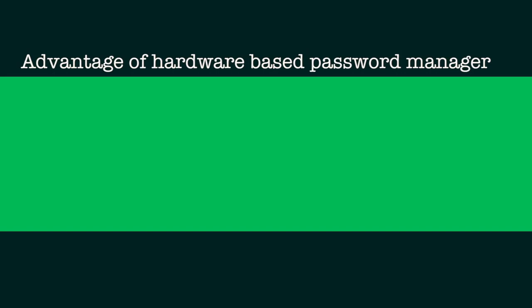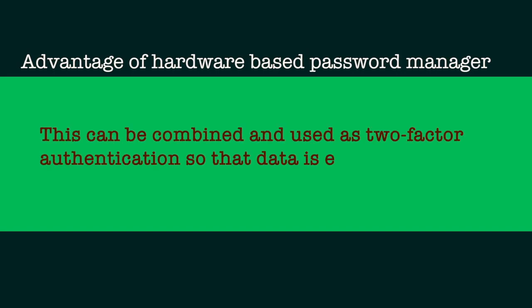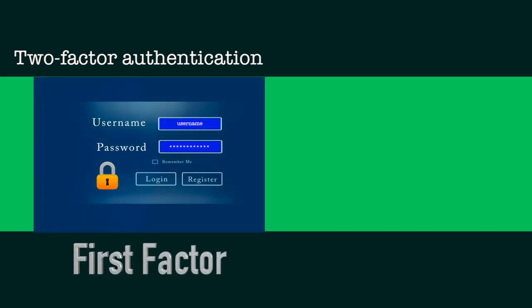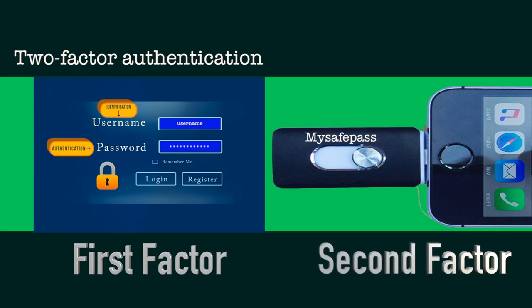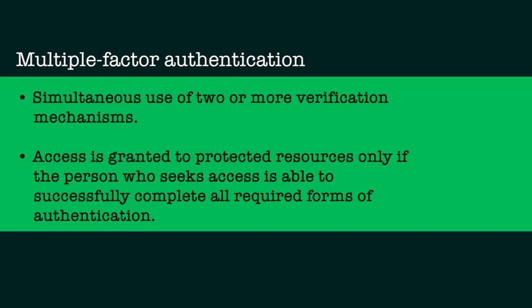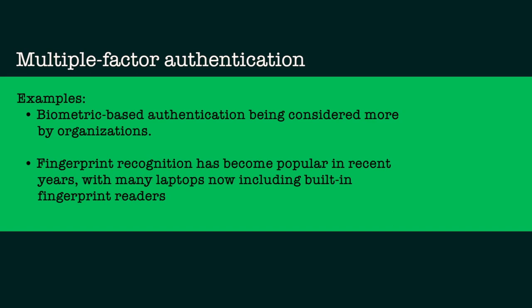Another advantage with a hardware token is that it can be combined as a two-factor authentication mechanism, so that your data is even more secure. When we say two-factor authentication — remember when we learned about identification and authentication — your username is the identification part, the authentication part is the password, and when you supply that password and insert the hardware token, the hardware token becomes the second factor, making it two-factor authentication. There are also multiple-factor authentication mechanisms available, but you use a particular device depending on the asset you are protecting. So if you are only protecting some document file, you may use only a password and hardware token combination rather than going for multi-factor authentication mechanisms involving biometric iris scans or finger scanners.